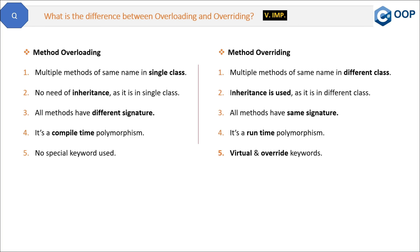Now comparing with method overloading: in method overloading, multiple methods of same name are in a single class, whereas in method overriding they are in different classes. In method overloading, there is no need for inheritance as it is in the same class, but in method overriding, inheritance is required as base class and derived class are involved.